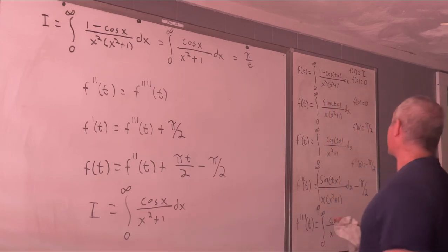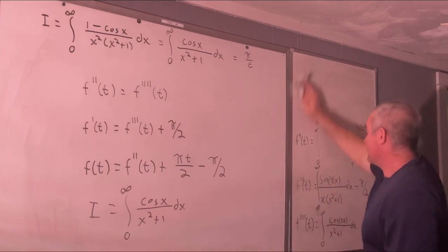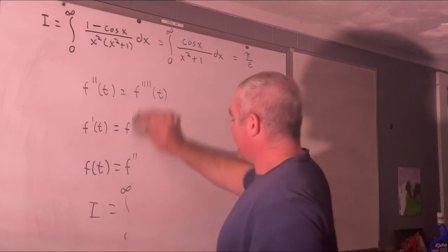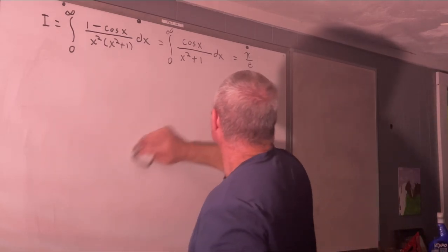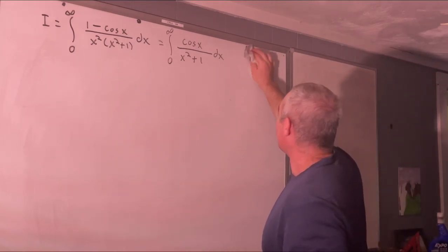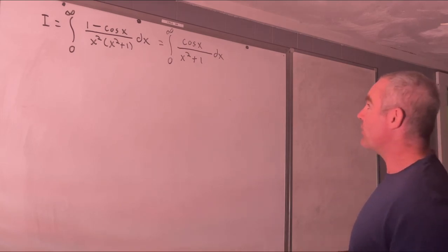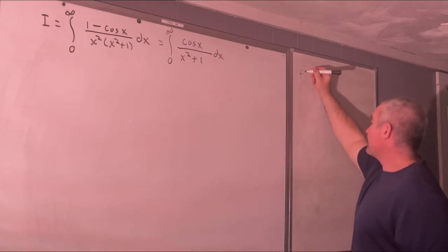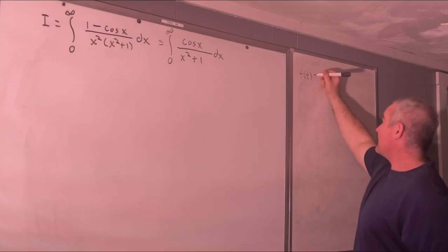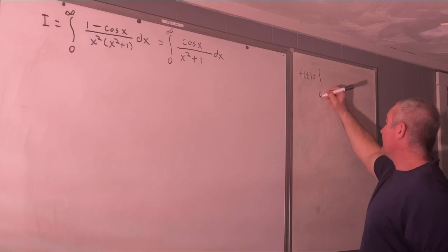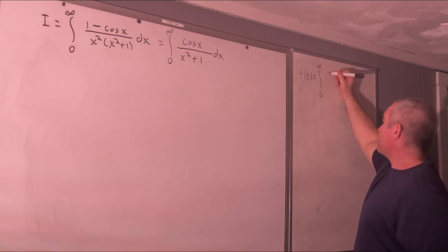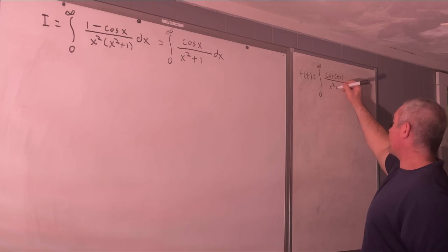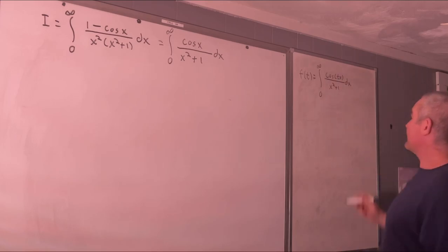We've reduced the original integral to the integral from 0 to infinity of cosine(x)/(x² + 1) dx, which should give π/e — or so I thought. Let's start over with Feynman integration on this simpler integral and show it explicitly.